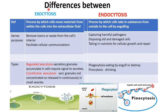Exocytosis is of two types: regulated exocytosis and constitutive exocytosis. In regulated exocytosis, secretory granules accumulate in a vesicle, and then a stimulus or signal is required. After that signal, the contents are extruded out — so whenever there is a signal, exocytosis occurs.